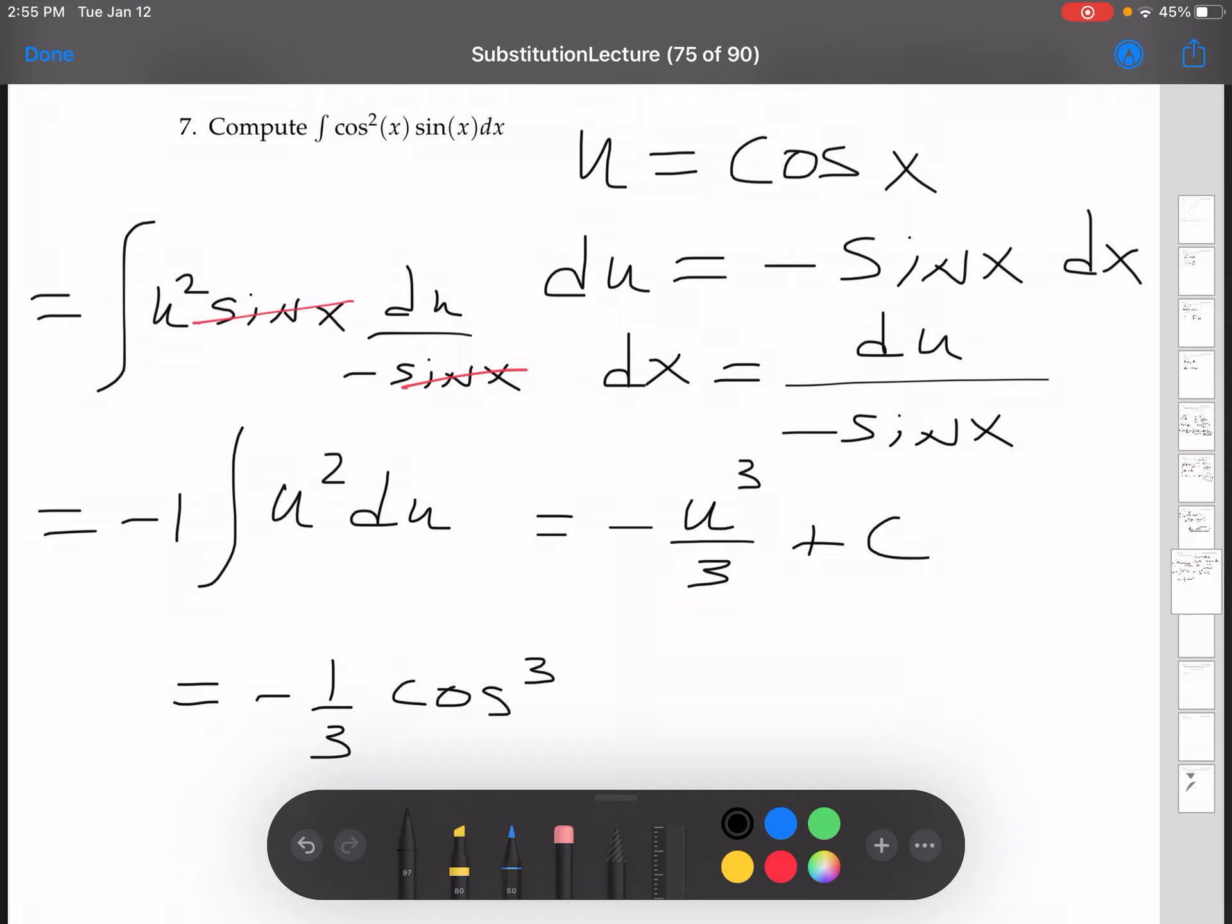Negative one-third cosine cubed x plus c. I think taking the derivative of this, that 3 would come down. All right, maybe we should just do that. I'll check my work here.